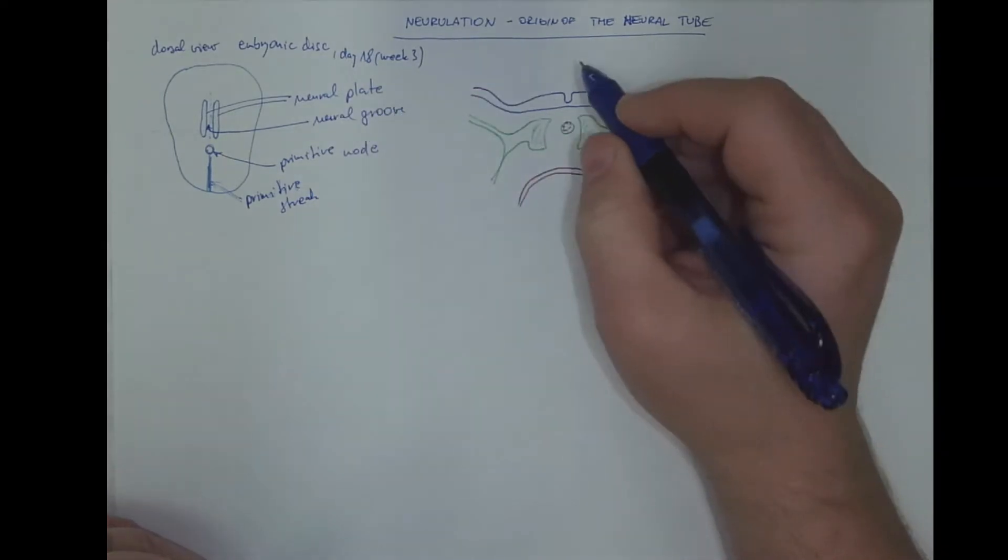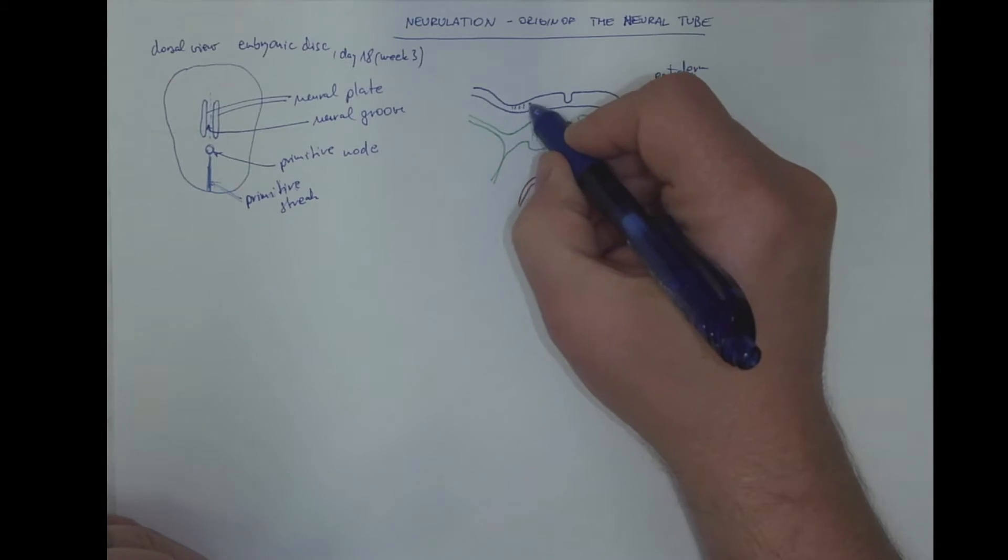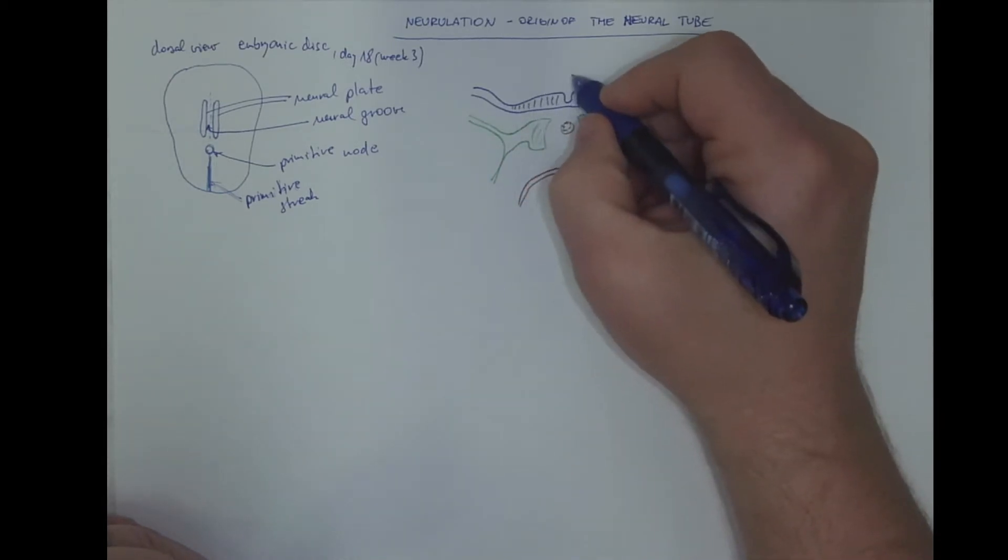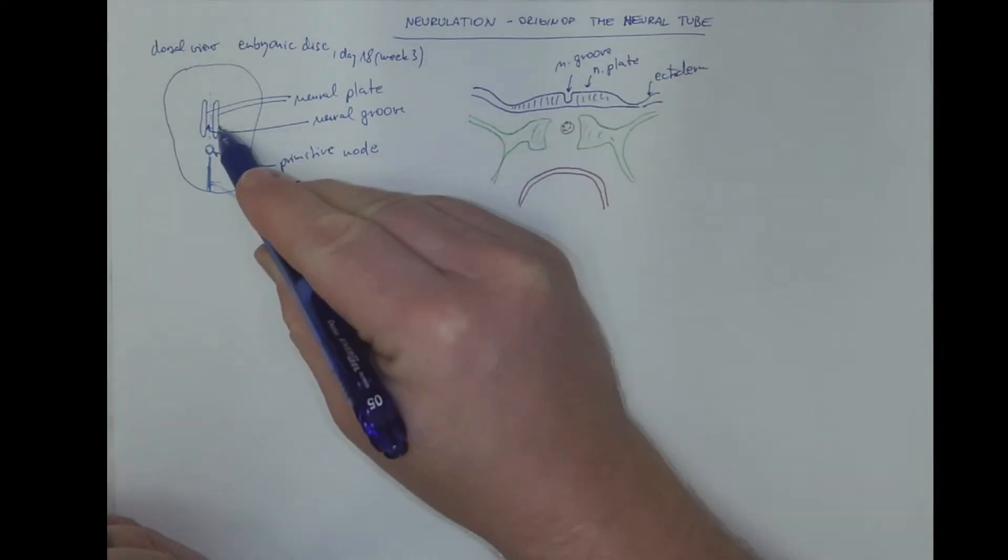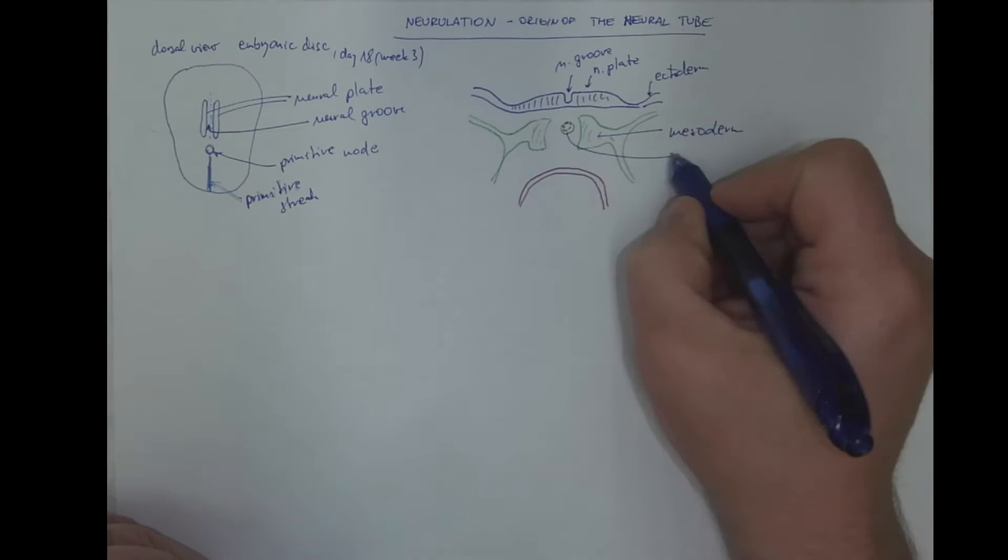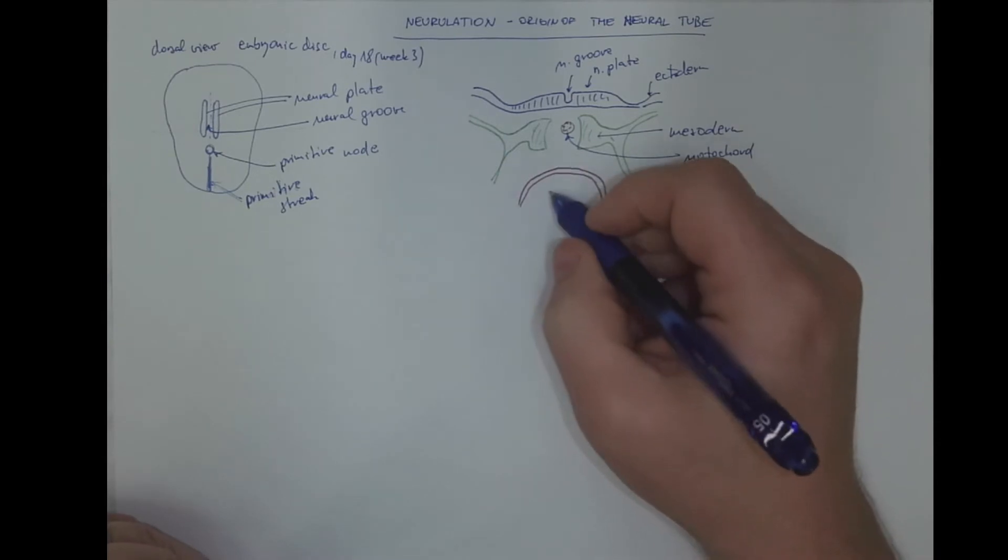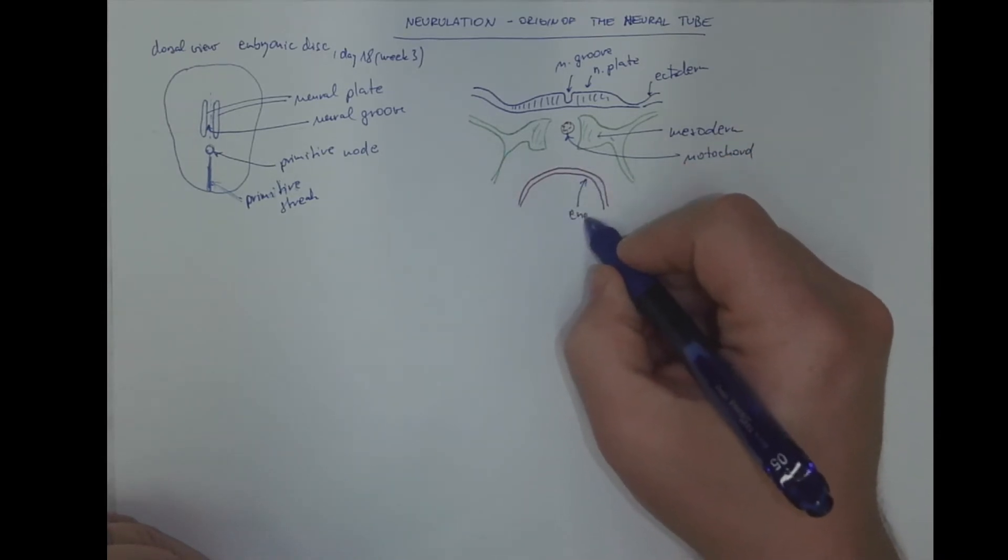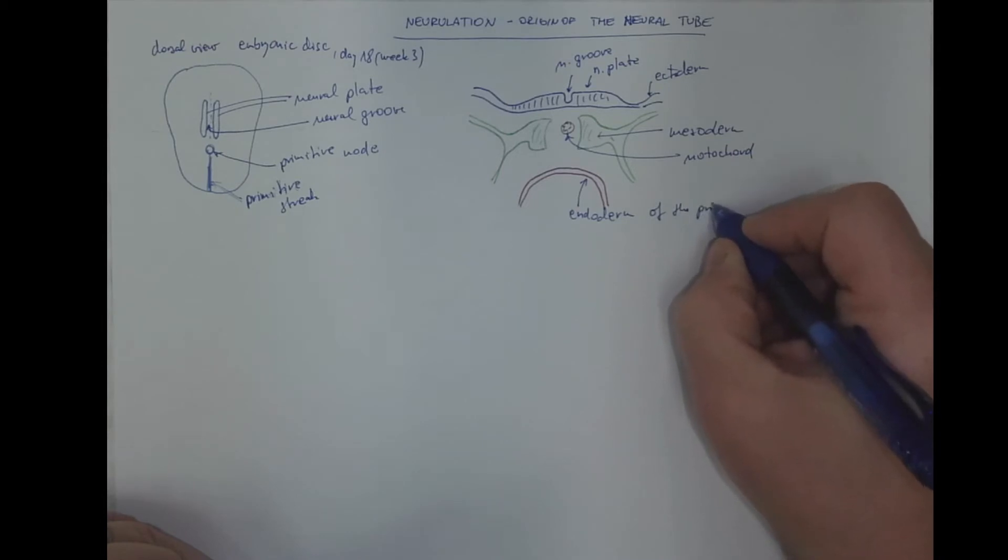In a cross-section, the dorsal ectoderm, where the thickening of the neural plates. This is the neural groove in the middle and the neural plate. This is the mesoderm. In the midline there is the notochord and the endoderm of the primitive gut derived from the yolk vesicle.